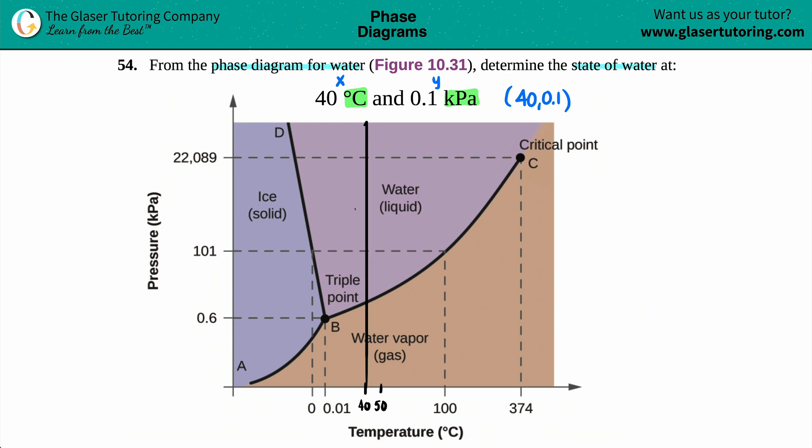Water can either be in the vapor stage, aka gas, or it could be liquid water. We know that by the colorings: gas is all the brown, and liquid is the lavender color.